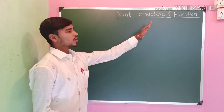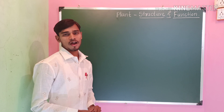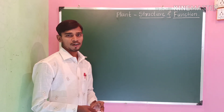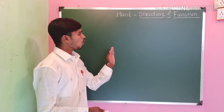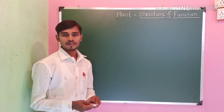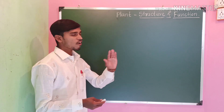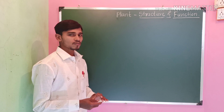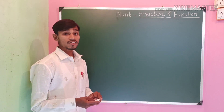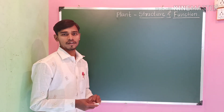Plant structure and functions — the various parts of plants. Root, stem, leaves, flower, and fruits are parts of plants. These parts differ from plant to plant. We identify the plant with the help of these characteristics. Let us study these organs in greater detail.